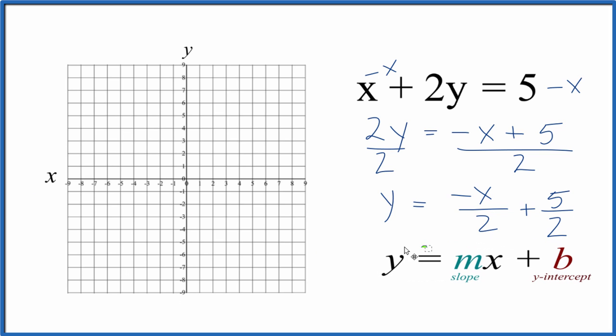So we're going to go to our y-axis here. This is our y-intercept, 5 over 2, which is just 2.5. So we go to 2.5, and that's where we cross the y-axis. It's our y-intercept.